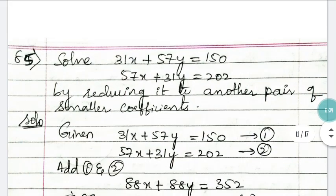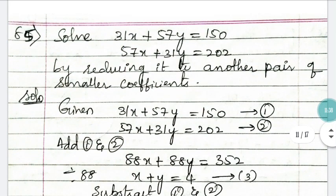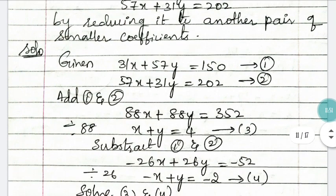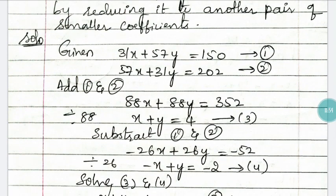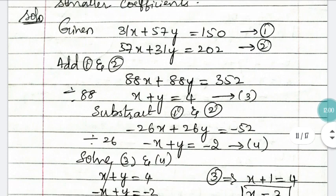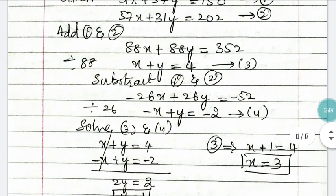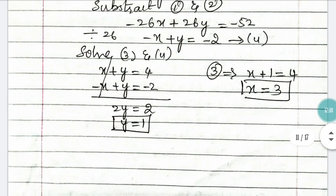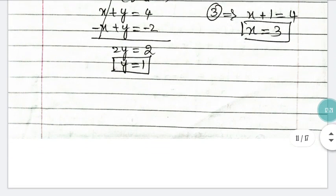Question 85: two equations are given — find the values of x and y by reducing to a pair of smaller coefficients. Add both equations to get one equation, divide by 88, then subtract both equations and divide by 26 to get simpler equations. Solve equations 3 and 4 to get y and x as 1 and 3.